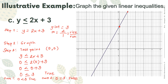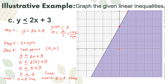Since the origin is included in the shaded region, here is our graph. Because our given inequality is less than or equal, we draw a solid (straight) line.